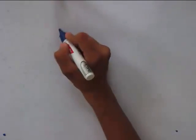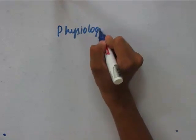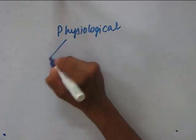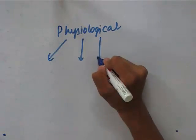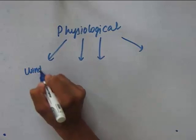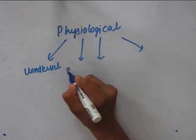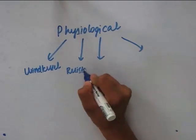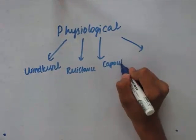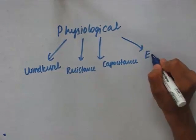Now let's go into the physiological classification of blood vessels. Physiologically, the blood vessels are divided into four types: the first one is the wind vessels, the second one is the resistance vessels, the third one is the capacitance vessels, and the fourth one is the exchange vessels.